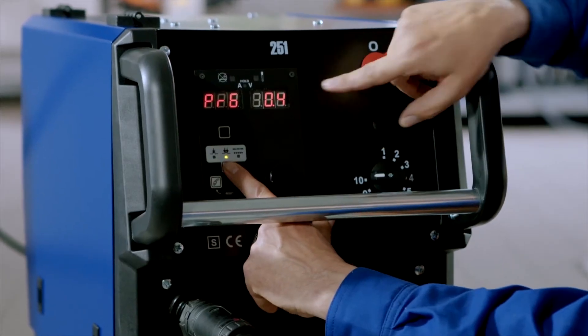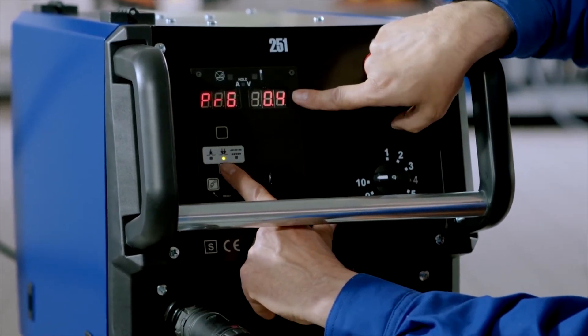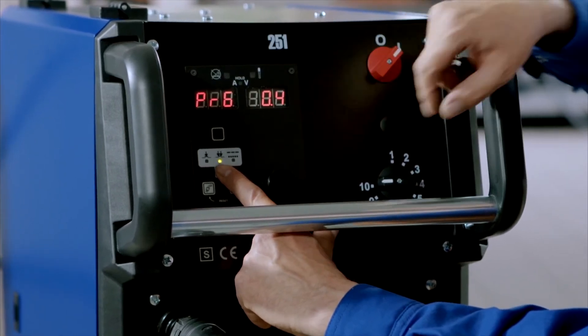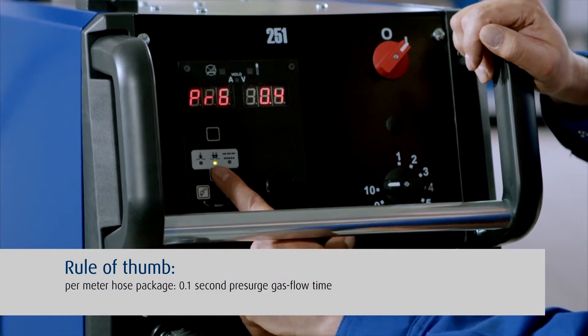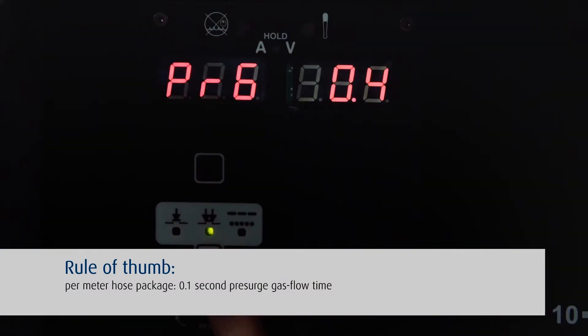Next, we are going to set the gas pre-flow time. You may be wondering why we need to do this. Quite simply, this setting prevents pores from forming. We recommend that you set 0.1 seconds of pre-flow time per meter or 3.3 feet of hose assembly. If you are using a 4-meter assembly, for example, we recommend a pre-flow time of 0.4 seconds.